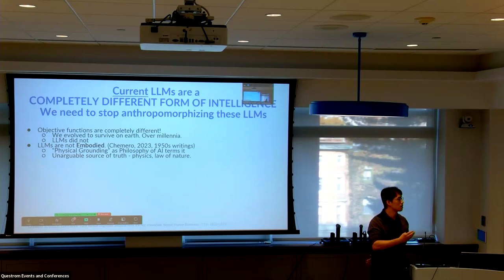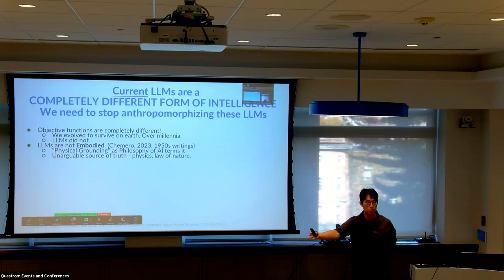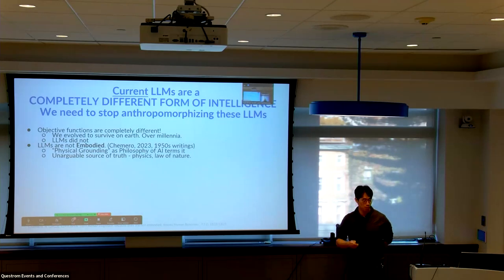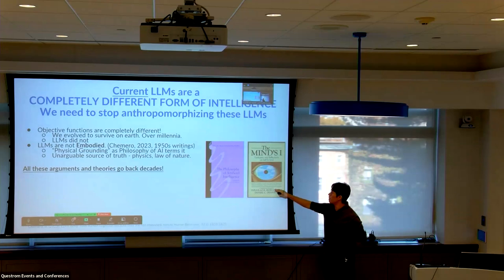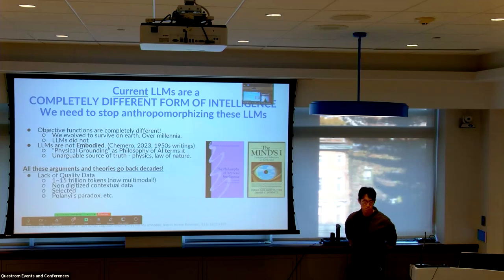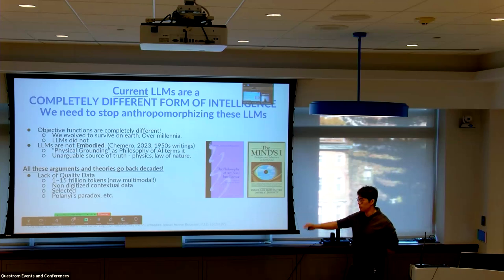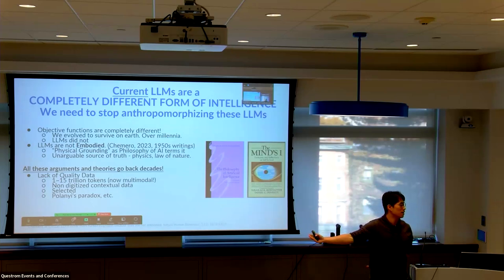LLMs are also not embodied — they don't have a sensory-motor body to interact with the physical world to learn truth. They've learned from one to fifteen trillion tokens online, though they're getting multimodal. This goes back to the philosophy of AI and physical grounding. We also lack quality data: a lot of non-digitized contextual data simply doesn't exist in training sets. And Polanyi's paradox says whatever we know that we cannot verbalize — tacit knowledge — is obviously not in LLMs either.